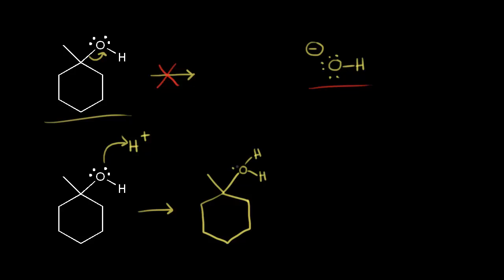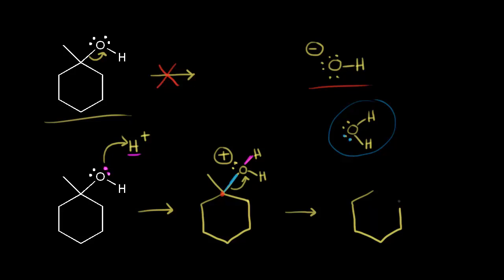After protonation, the oxygen is bonded to two hydrogens with a lone pair remaining, giving it a plus one formal charge. Now we're ready for loss of a leaving group — if these electrons come off onto the oxygen, we form water as a leaving group. We know from our pKa table that water is a good leaving group. We're taking a bond away from the carbon in red, so we also form a tertiary carbocation. By thinking about your pKa values, you can determine the stability of the conjugate base and therefore whether a leaving group is good or bad — and that helps you when drawing mechanisms.